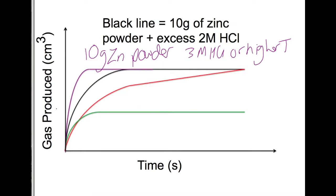Let's now look at the red line. The red line is not as steep as the black line so it is slower but it finishes at the same point so we're still getting the same amount of gas given off so we must still have 10 grams of zinc. And in this case they may be lumps with the HCl still 2M or perhaps we have a lower concentration of HCl still in excess or a lower temperature.